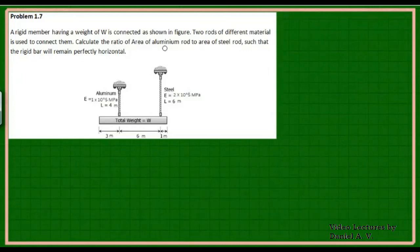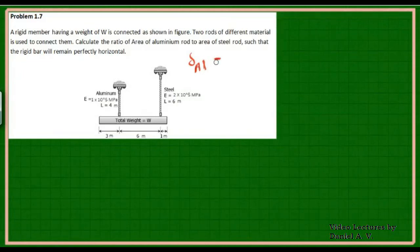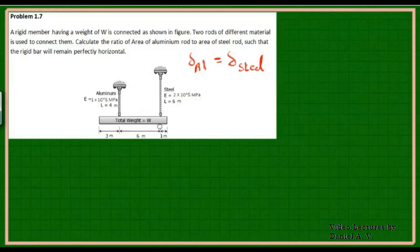We need to calculate the ratio of the area of the aluminium rod to the area of the steel rod such that the rigid bar will remain perfectly horizontal. Even after the application of the load, the rigid member should remain horizontal, which means the elongation of both the steel and aluminium rods should be the same. That is the key condition given in this problem.